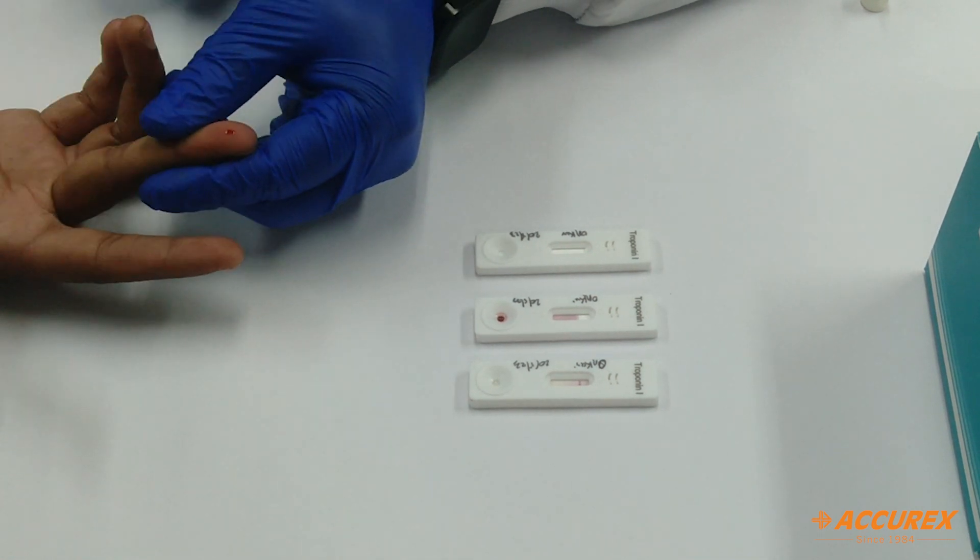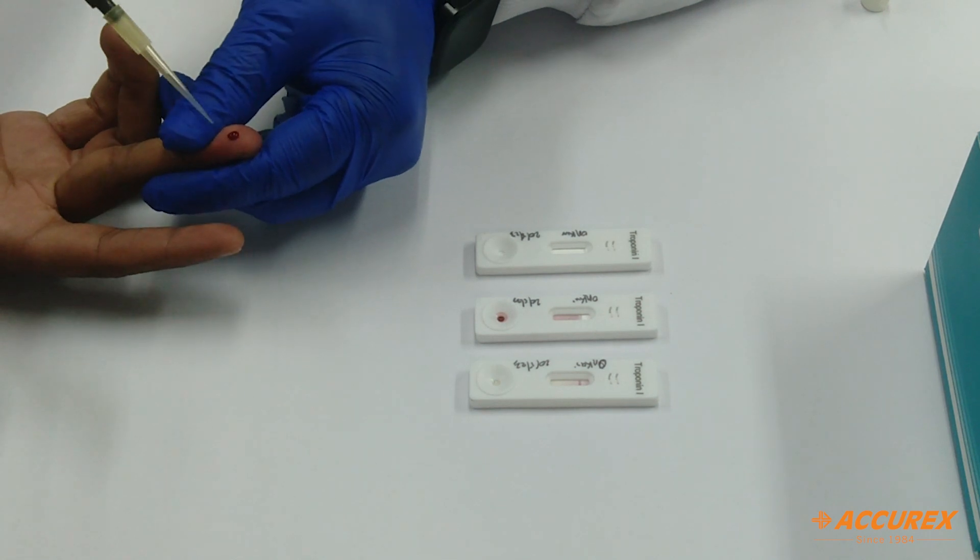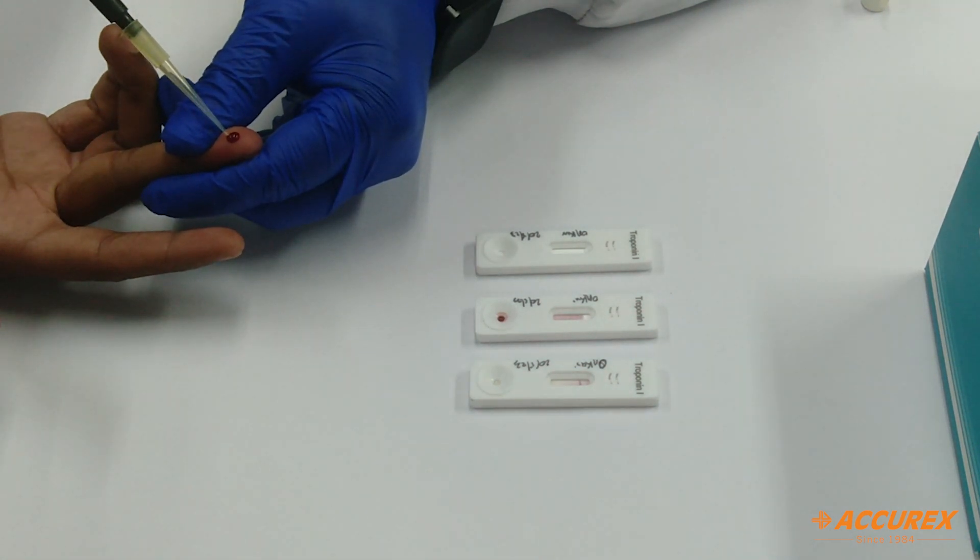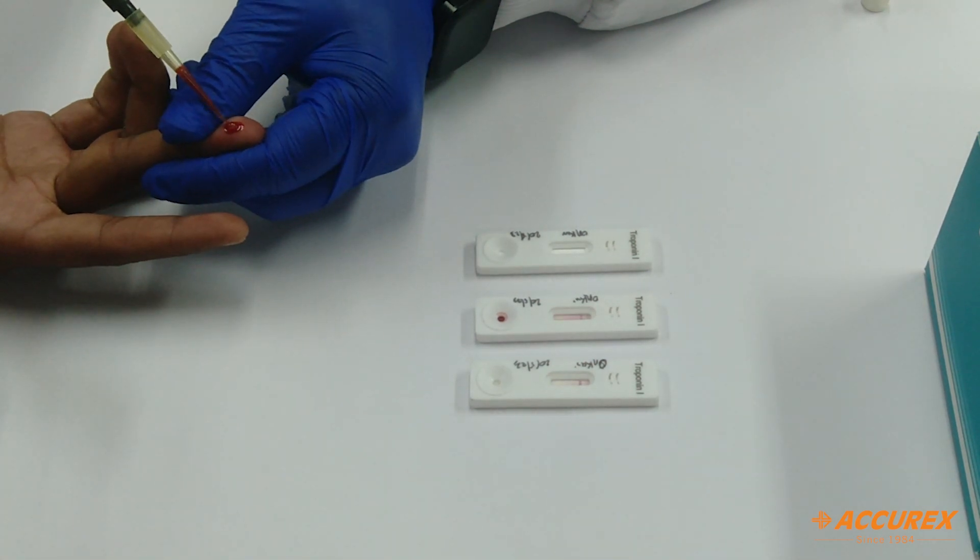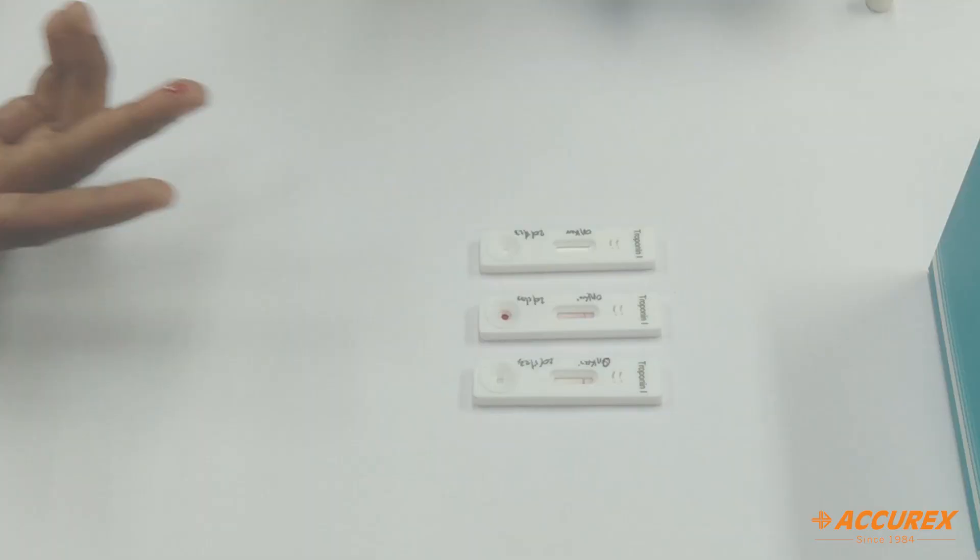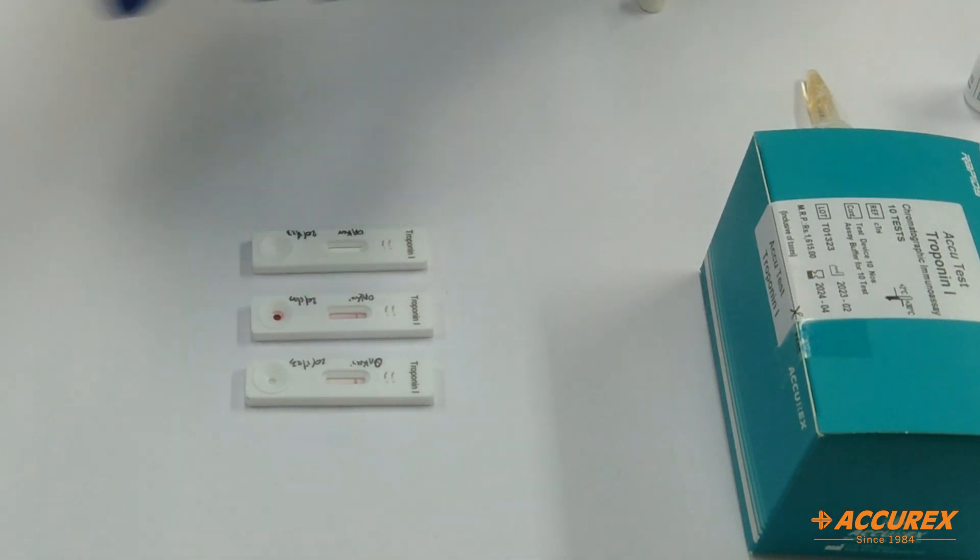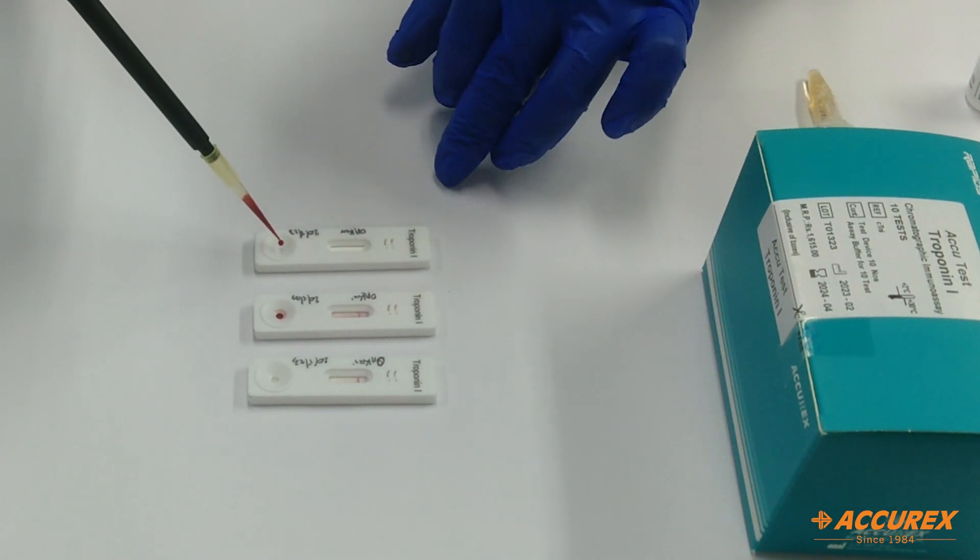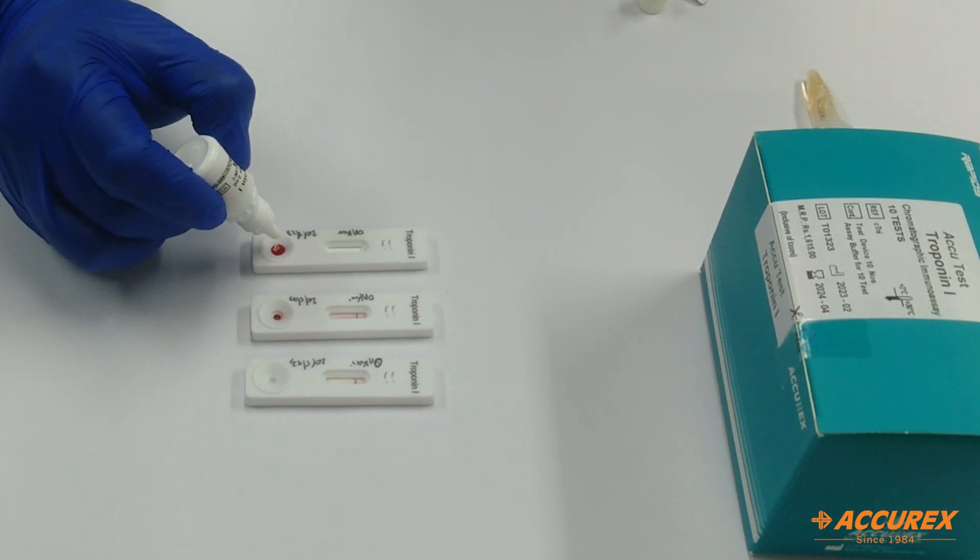Here you need to collect 75 microliters of whole blood sample. We will add this finger prick sample in the well, then we will add buffer.